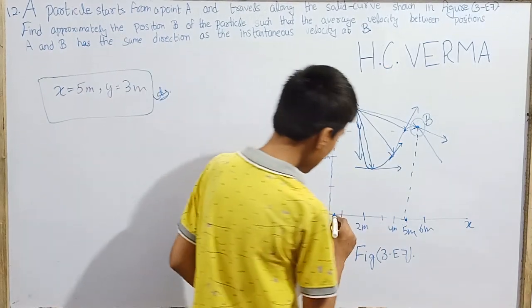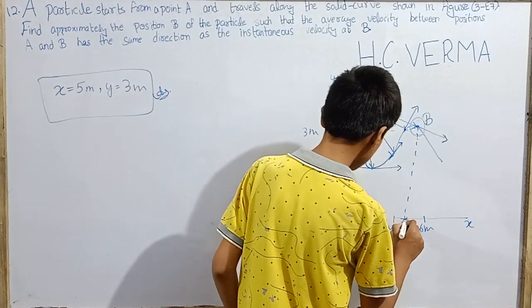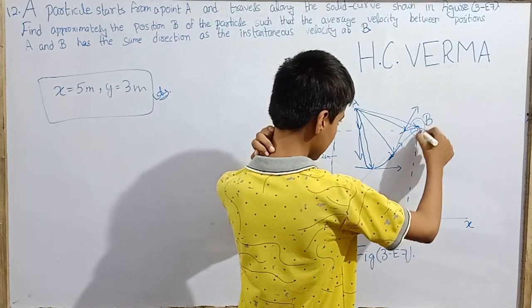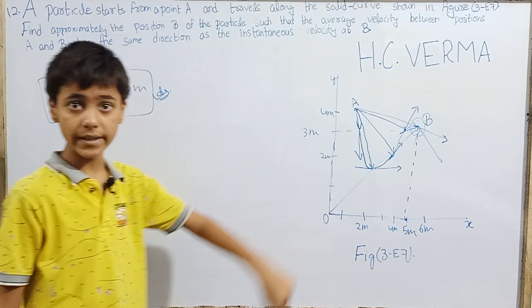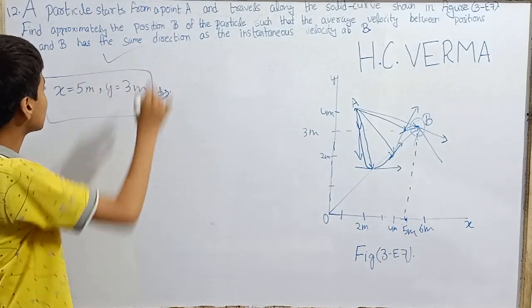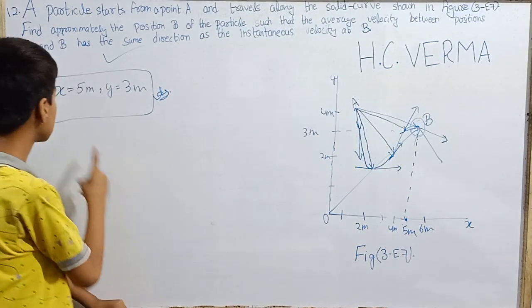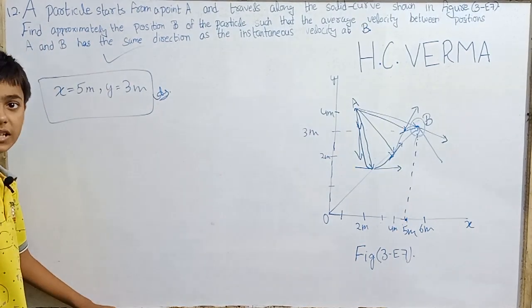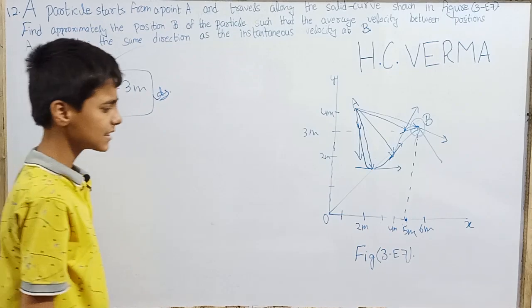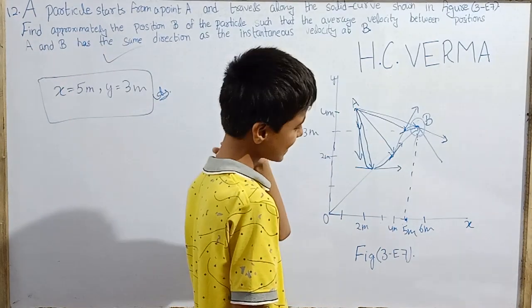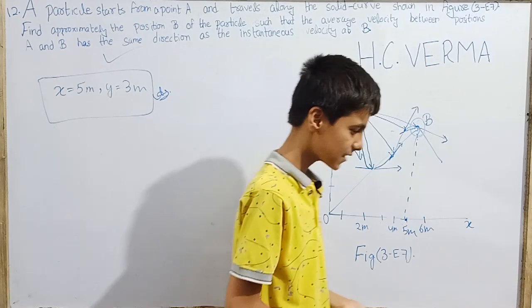If you want, you can also find the distance between point O and point B, but we are not really required to find that. Otherwise, it would be under root of x square plus y square, meaning 5 squared is 25 plus 3 squared is 9, so that will be under root of 34, and you can find that distance, but we really aren't required to do that.